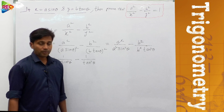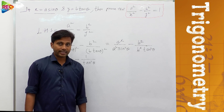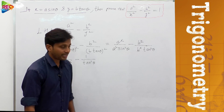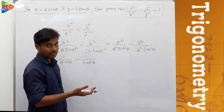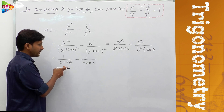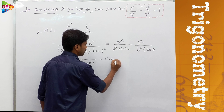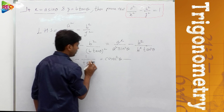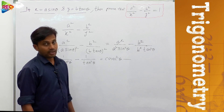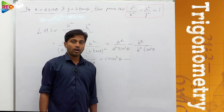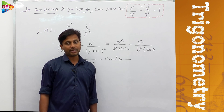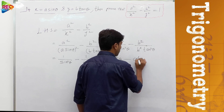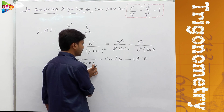What is the value of 1 over sin θ? It is cosecant θ, because sin θ is the reciprocal of cosecant θ. So 1 over sin²θ is cosec²θ. This is minus. Now 1 over tan²θ — since tan θ is the reciprocal of cot θ, 1 over tan θ equals cot θ, so 1 over tan²θ equals cot²θ.